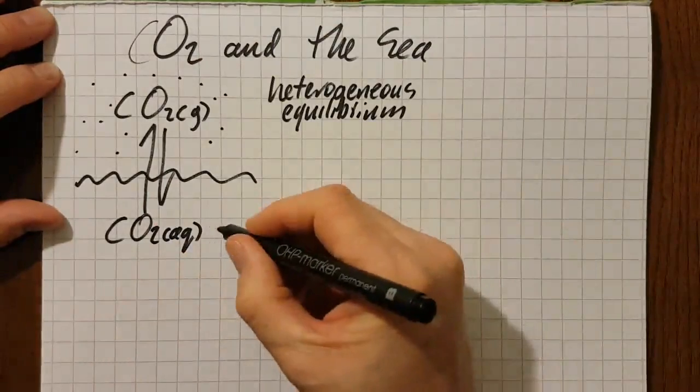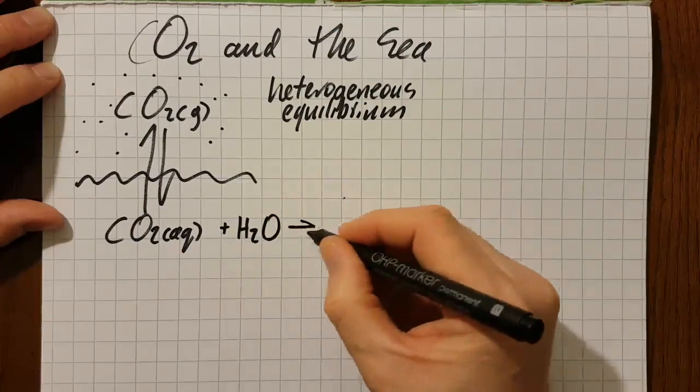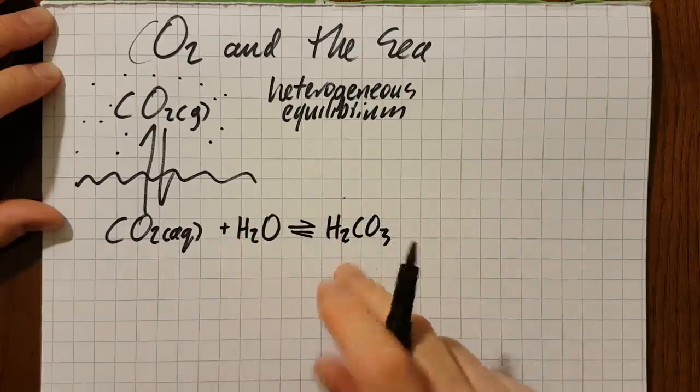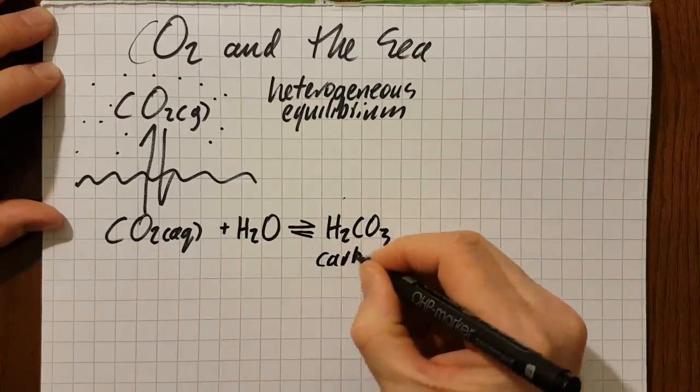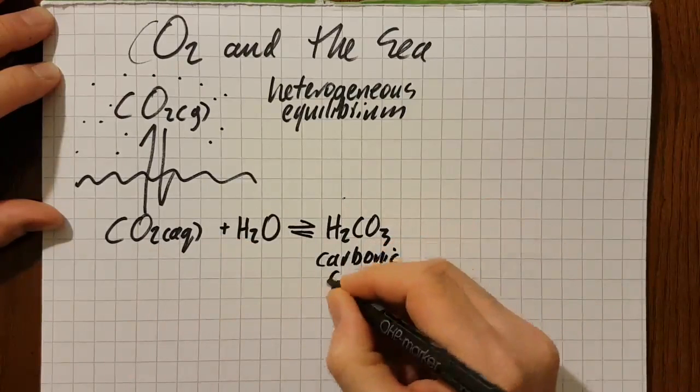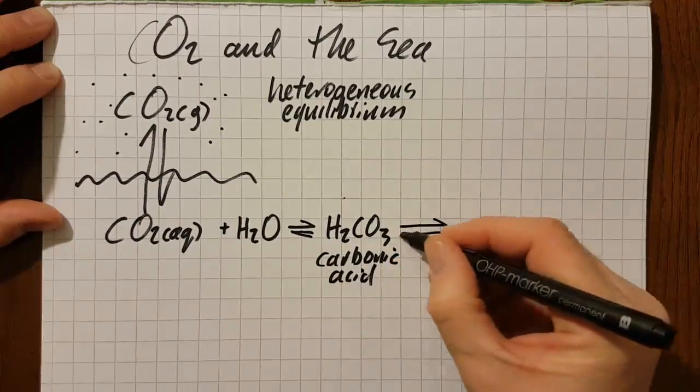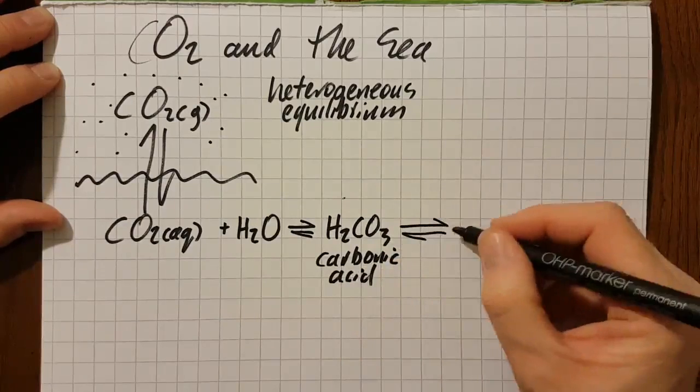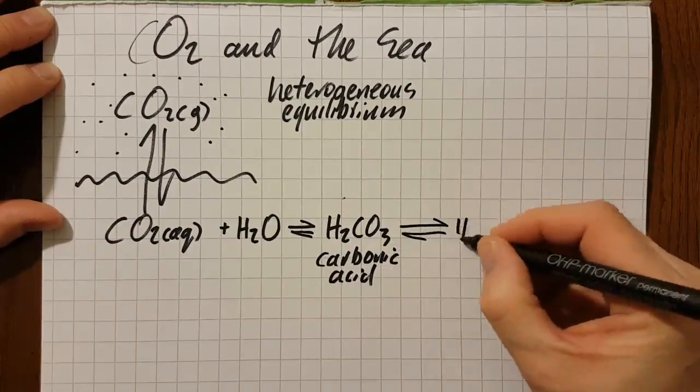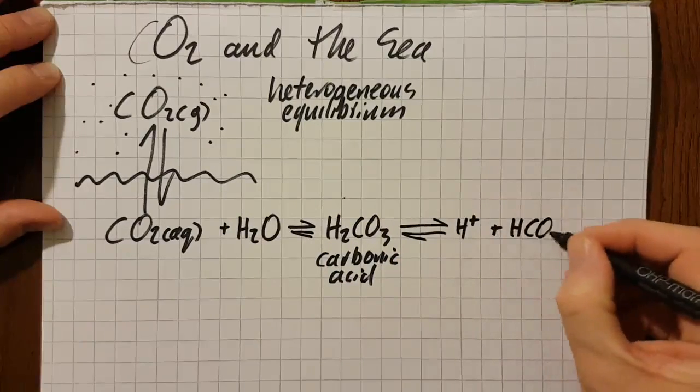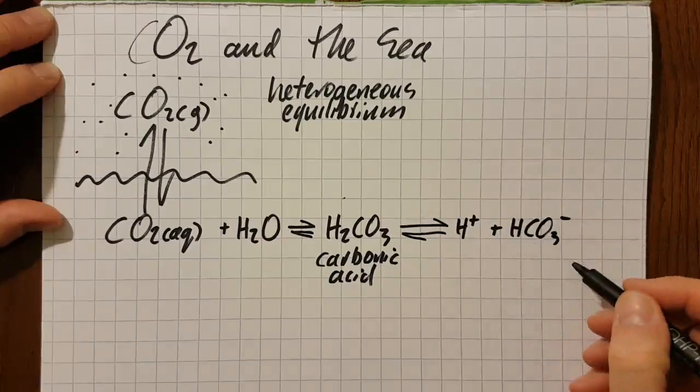So why does that matter? It's going to make, through this reaction, carbonic acid, which is also the naturally occurring acid in acid rain. Carbonic acid is a weak acid, so it will once again have another equilibria and that becomes the hydrogen ion and the hydrogen carbonate ion.